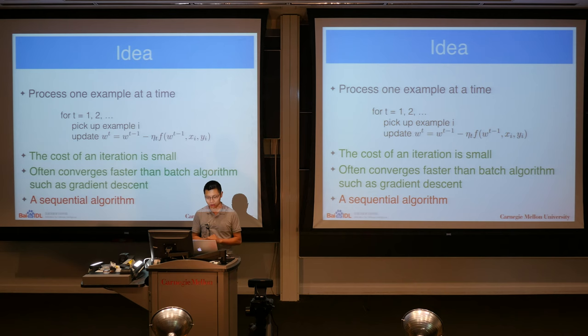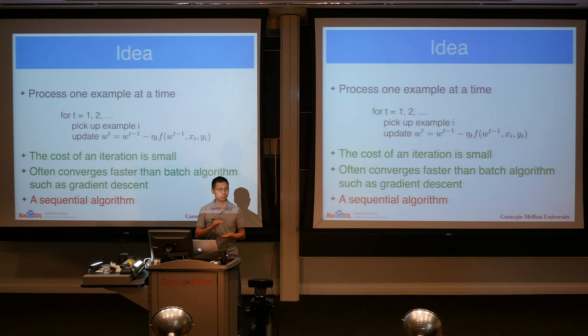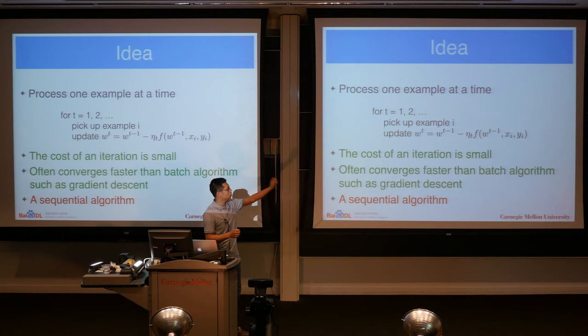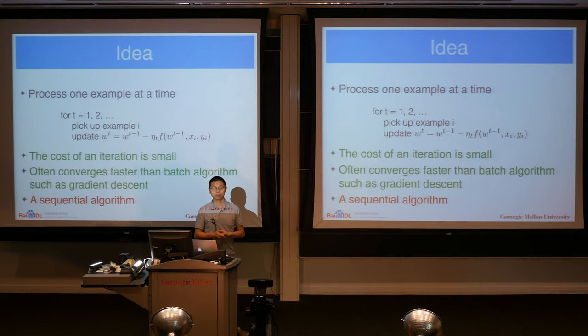The basic idea of SGD is quite simple. Instead of using the whole training data for gradient descent, SGD each time only looks at one example. The algorithm iterates: at each time step t, you choose example i, compute the gradient over that example, and update the model as: model minus learning rate times the gradient on this example. That is the basic idea.